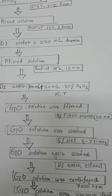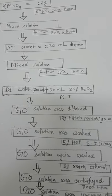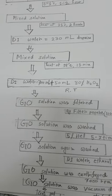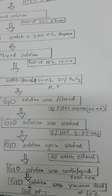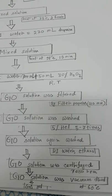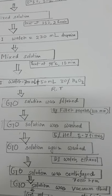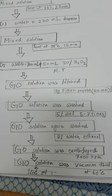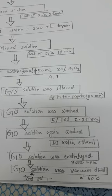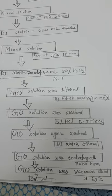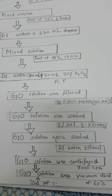Then I washed the graphene oxide solution with 5% HCl so that the remaining ions should be neutralized. Then again I washed with DI water and ethanol. Then the graphene oxide solution is ready.